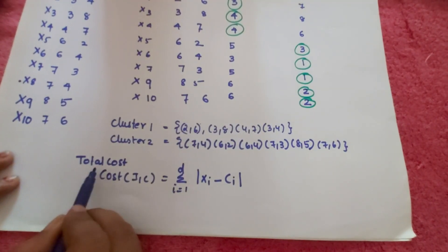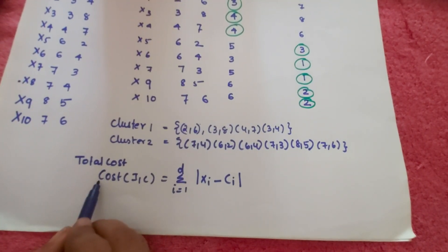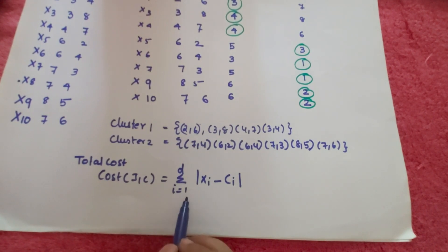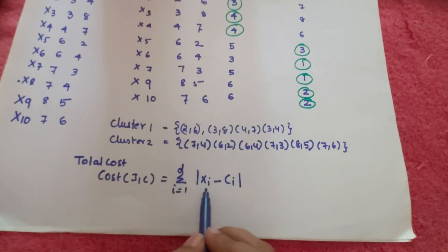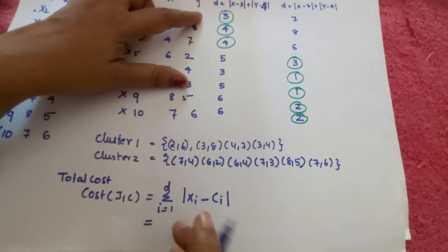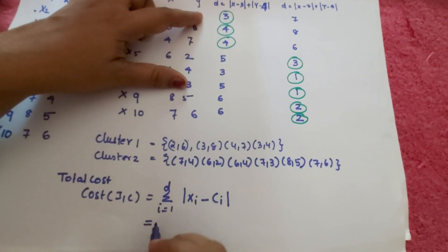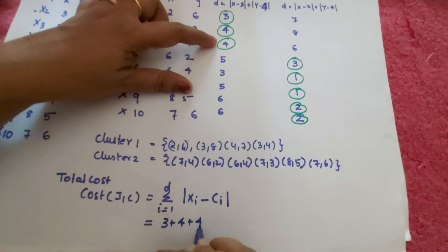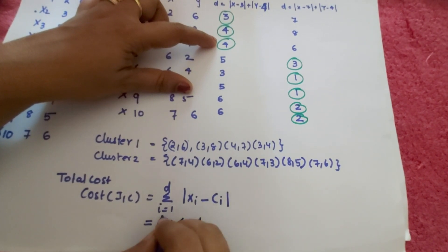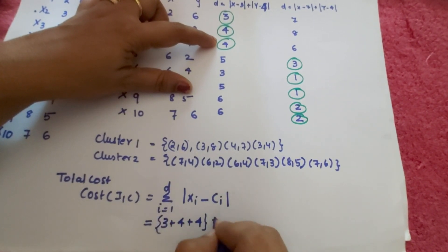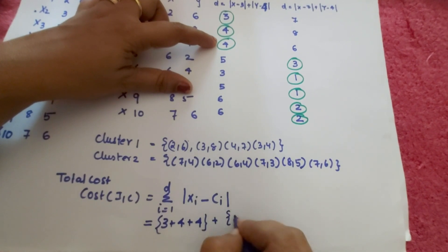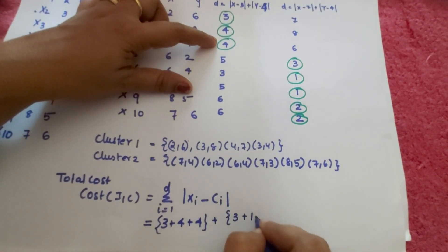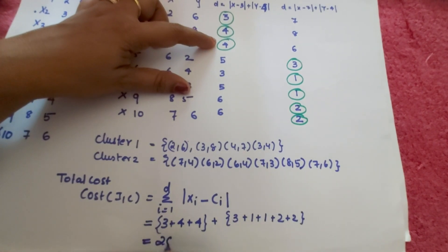The total cost is calculated as σ(xi − ci) for i from 1 to d. Adding up the minimum distances: 3 + 4 + 4 + 3 + 1 + 1 + 2 + 2 = 20. So the total cost is 20.